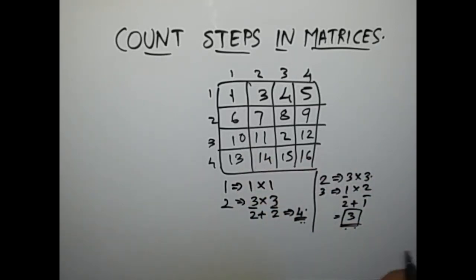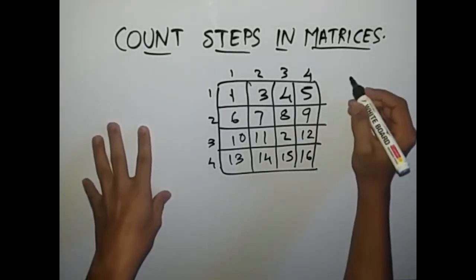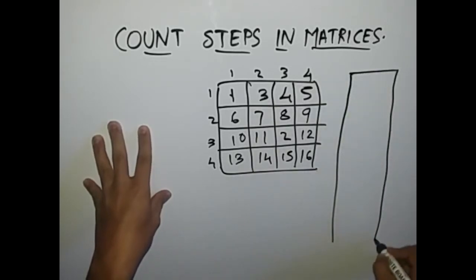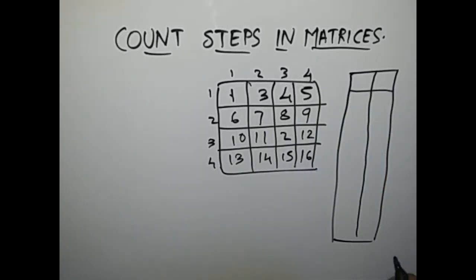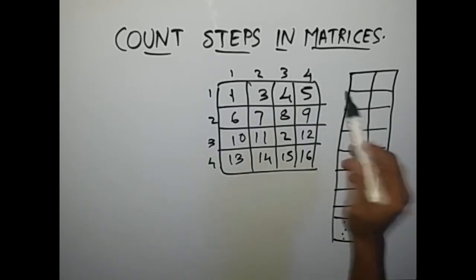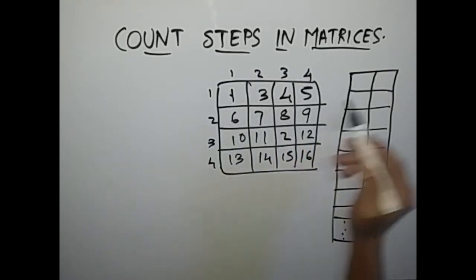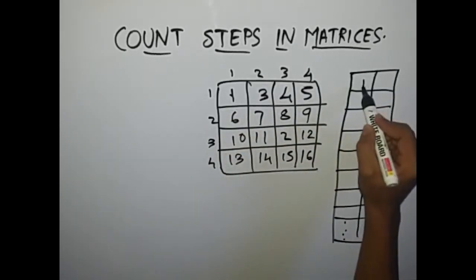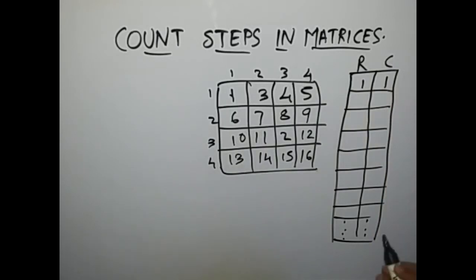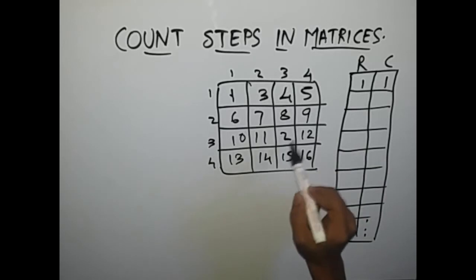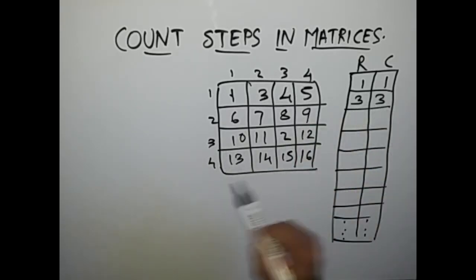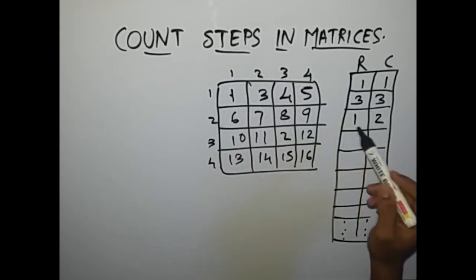Now how to code this problem? We take a large array of n rows and just 2 columns. We use the same technique called hashing, which we used in the last problem — the link is in the description. The first row of the array indicates element number 1, and we store its row number and column number. So for element 1 at position row 1, column 1, we store 1, 1. Element 2 is stored at row 3, column 3, so we store 3, 3. Element 3 is stored at row 1, column 2, so we store 1, 2.